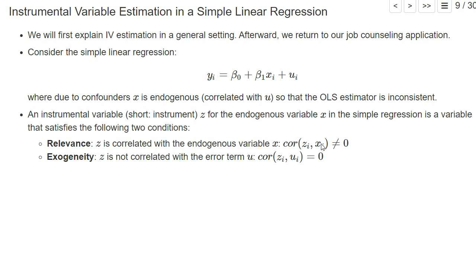There are formal tests, so-called weak instruments tests, that will test whether this correlation is big enough, but let's not discuss this at the moment. The second condition is our instrument z shall not be correlated with the error term, so the correlation between z and the error term shall be equal to zero.